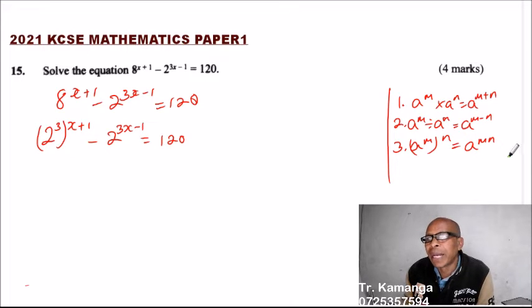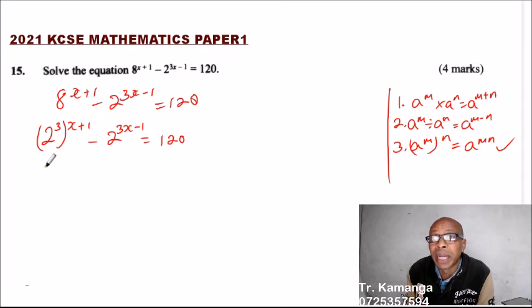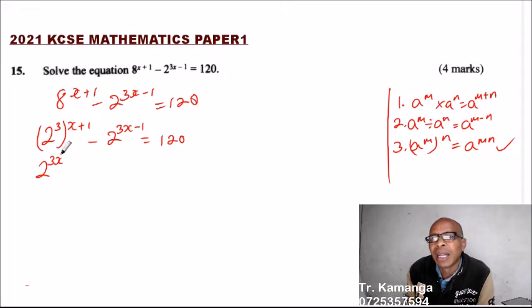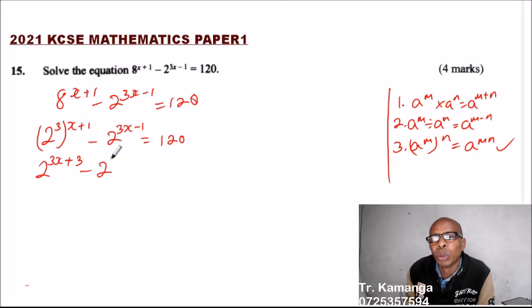Now we apply the third law of indices. We open the bracket: 2 to the power 3 multiplied by (x+1) gives 2^(3x+3), minus 2^(3x-1) equals 120.